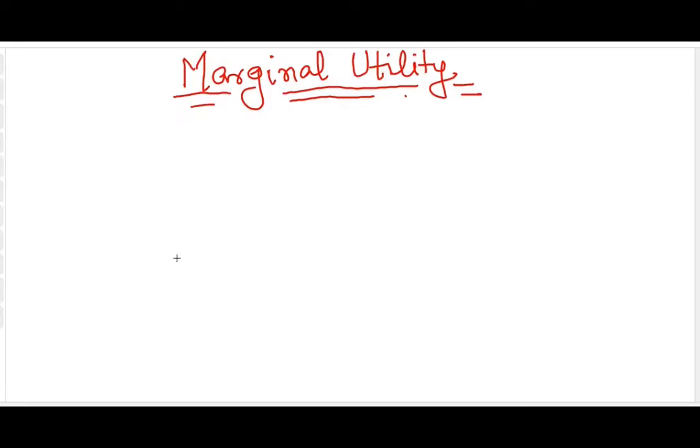The concept of marginal utility is not very difficult to understand. Let's say you have a utility function U for two goods x1 and x2, and you keep one good fixed, say x2, and change the other one.